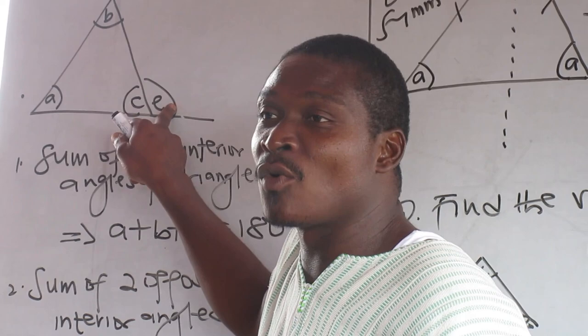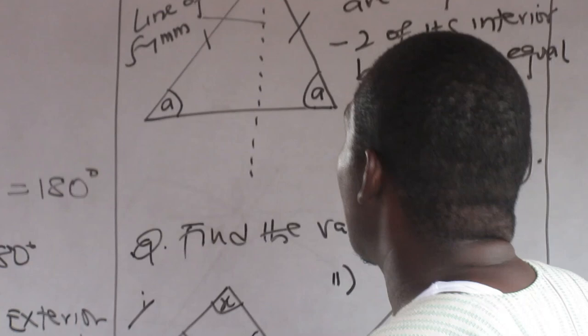Are you okay? So if I add this and this, I should get the one outside here. Only two properties of triangles.